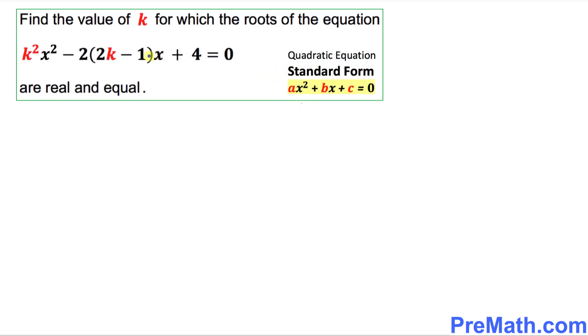Now we are going to compare our given quadratic equation with the standard form ax² + bx + c = 0. We can see that our a value equals k², b equals -2(2k-1), and c is simply 4.